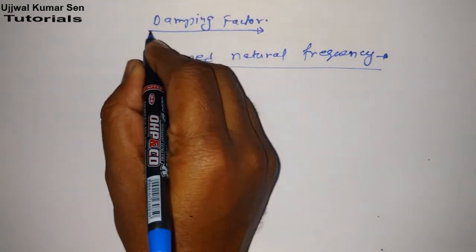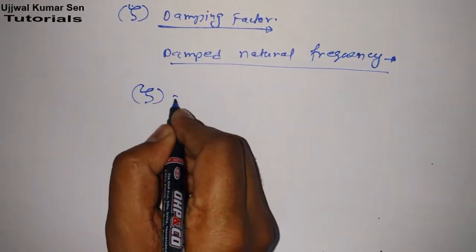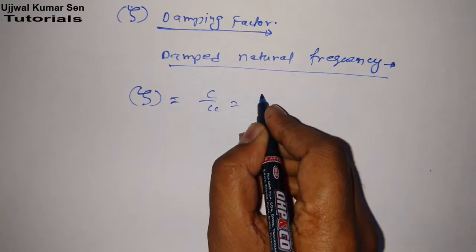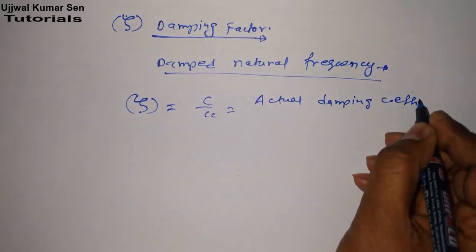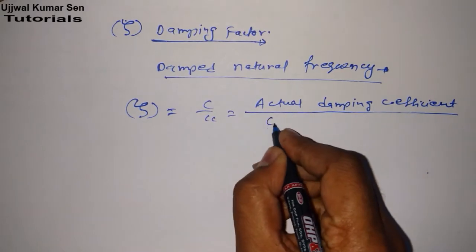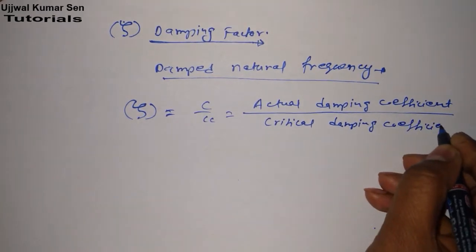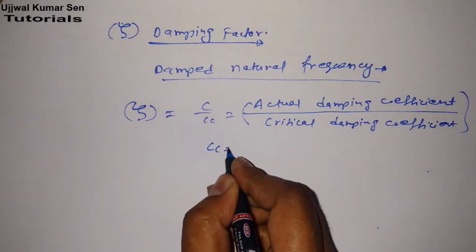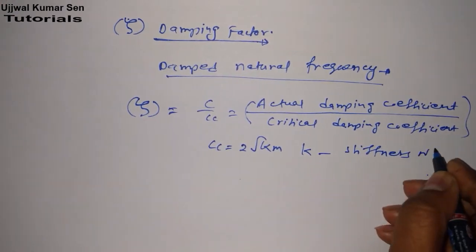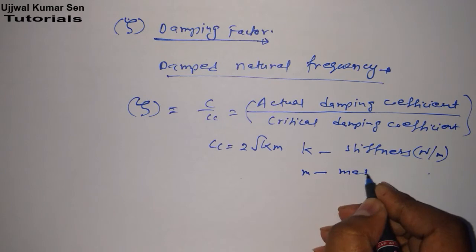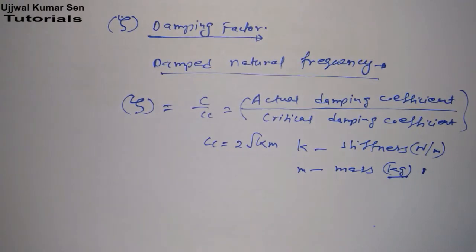So what is basically damping factor? This is denoted by zeta (ζ). Damping factor zeta is equal to c by cc, that means actual damping coefficient divided by critical damping coefficient. And we also know cc is equal to 2√(km). K is stiffness, its unit is in newton per meter, and m is mass, its unit is in kg. So this is all about damping factor.